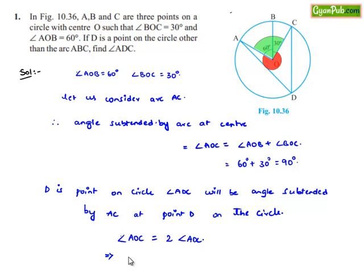Which implies we got angle AOC as 90 degrees, which is equal to 2 times angle ADC, which implies angle ADC is equal to 90 degrees by 2, which is 45 degrees. Therefore angle ADC is equal to 45 degrees.